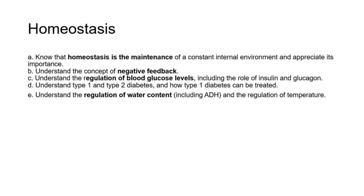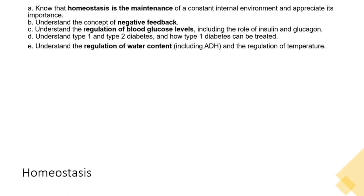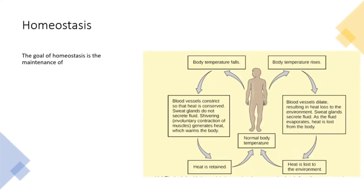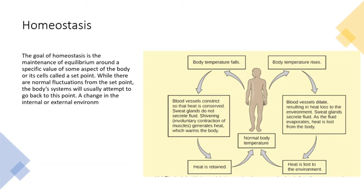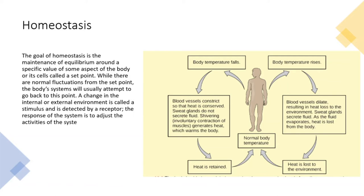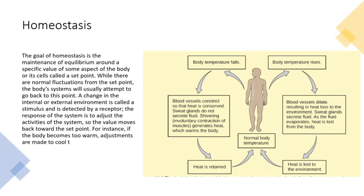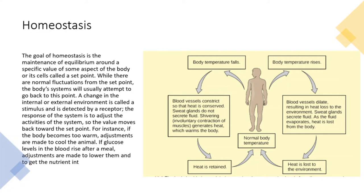Now a key aspect to bodily functions is homeostasis. The goal of homeostasis is the maintenance of equilibrium around a specific value of some aspect of the body or its cells, called a set point. While there are normal fluctuations from a set point, the body's systems will usually attempt to return to this point. A change in the internal or external environment is called a stimulus and is detected by a receptor. The response of the system is to adjust activities so the value moves back toward the set point. For instance, if the body becomes too warm, adjustments are made to cool the animal. If glucose levels in the blood rise after a meal, adjustments are made to lower them and to get the nutrient into tissues that need it or to store it for later use.